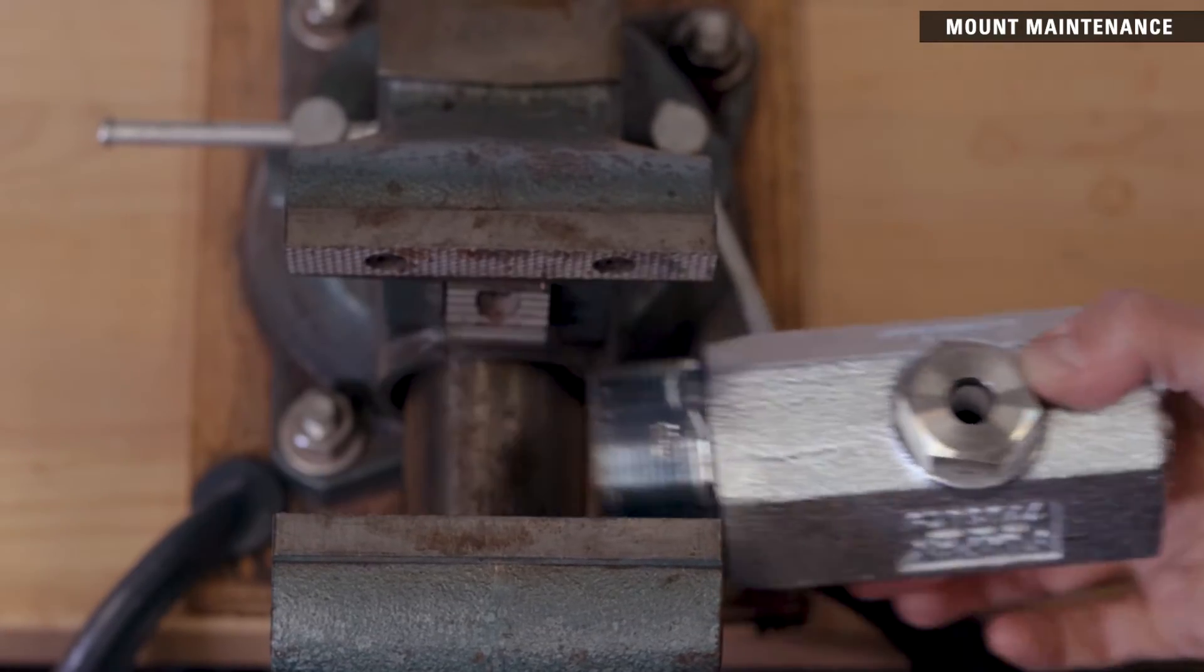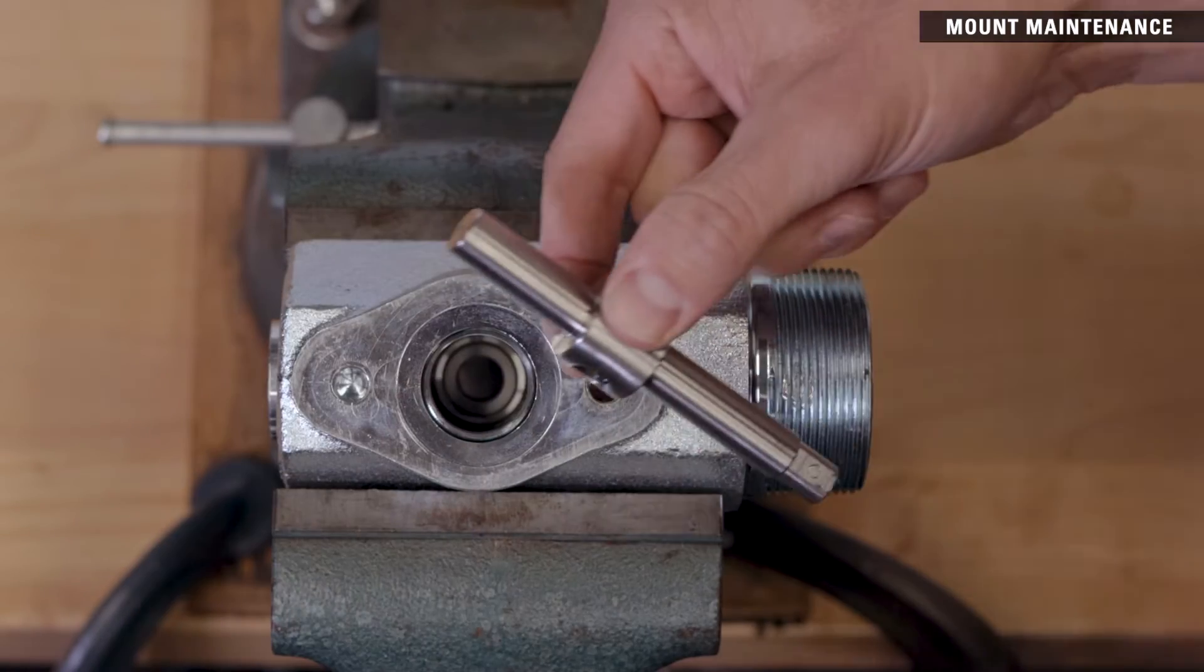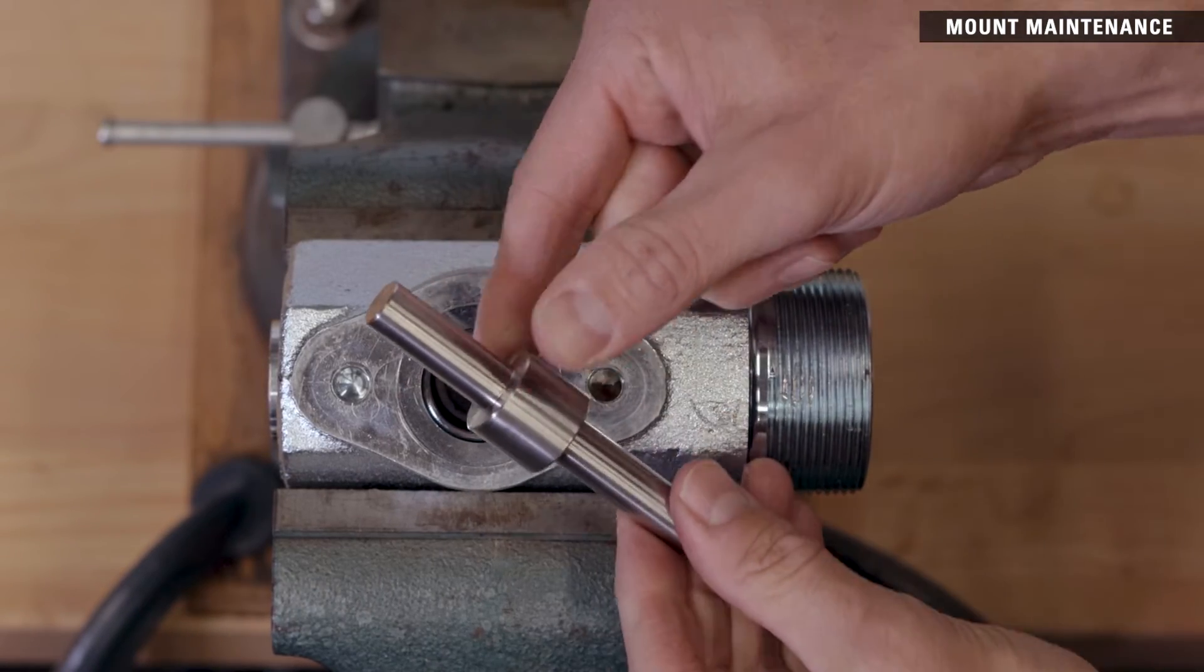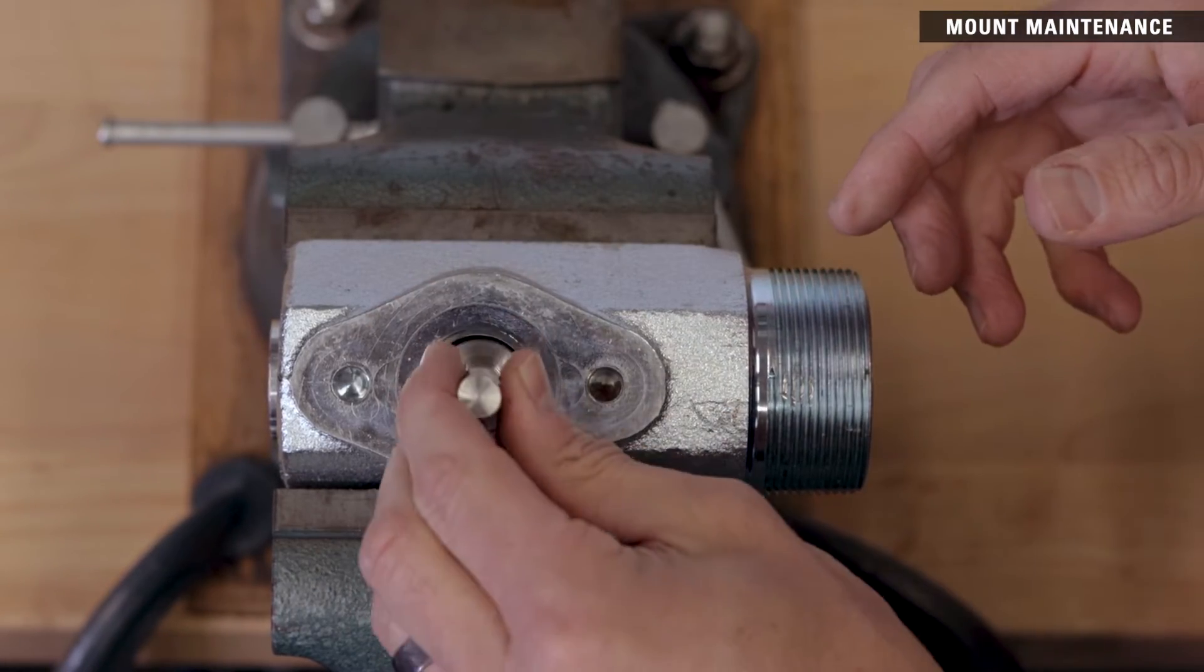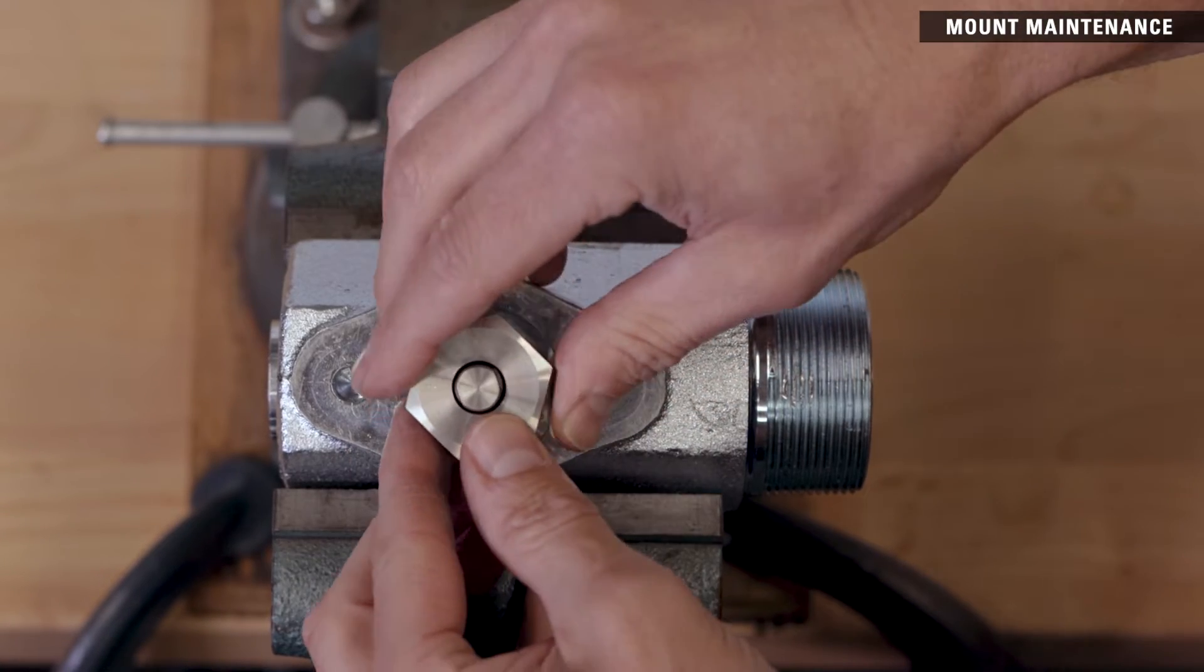Flip the mount over in the vise. Then insert the short side of the shaft into the installed bearing hub. Thread on the second bearing hub over the shaft and torque to between 30 and 35 foot-pounds.